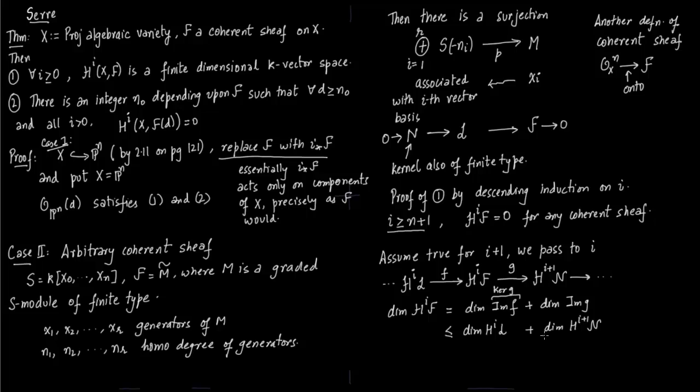Image of f is less than or equal to dimension of H^i(L), and image of g is less than or equal to dimension of H^(i+1)(N). This i+1 part is finite by induction hypothesis.